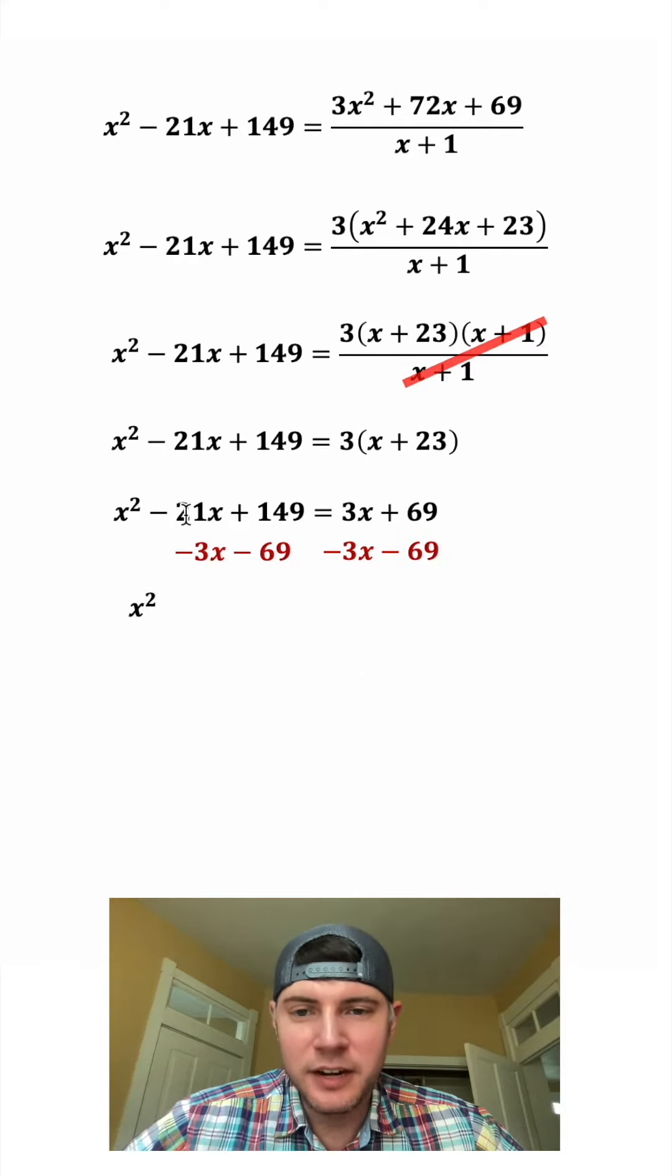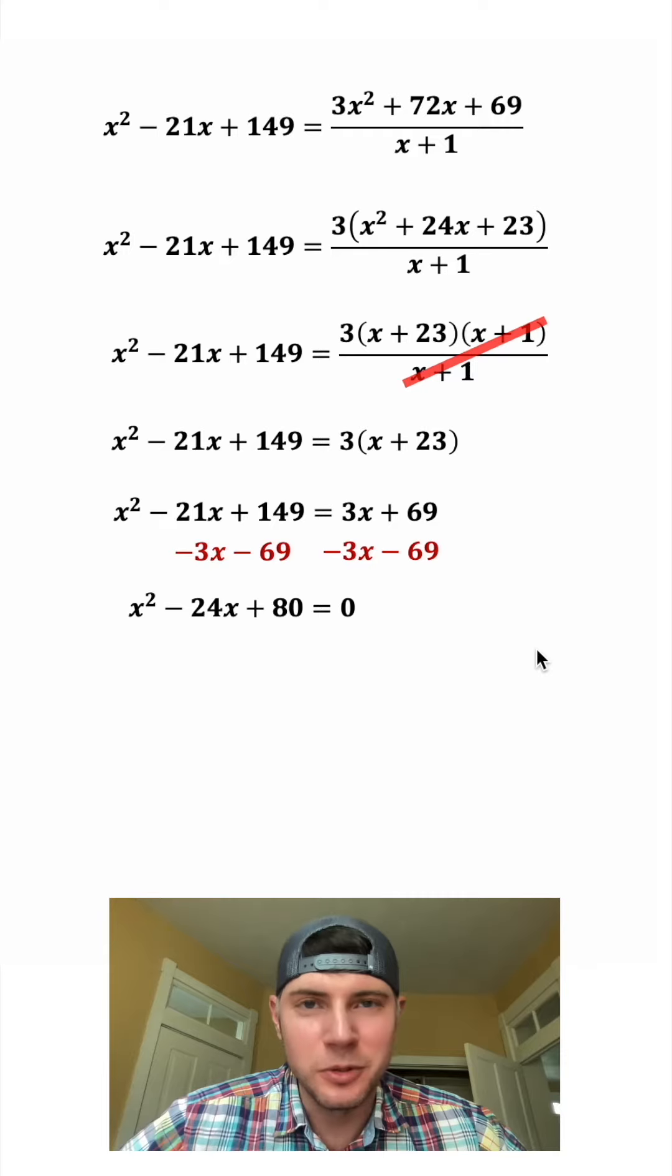So we have x squared. Negative 21 minus 3x is negative 24x. And 149 minus 69 is 80. And this is all equal to 0.